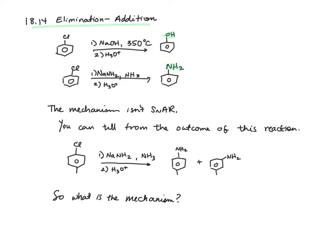This mechanism isn't S_NAr, and you can tell from the outcome of this reaction. When you have paramethylchlorobenzene and treat it with sodium amide and ammonia, then water, the products are both para and meta to the methyl group. That is not consistent with the S_NAr mechanism.